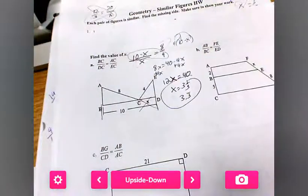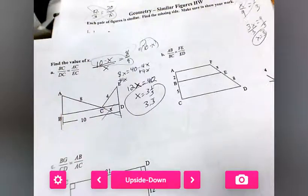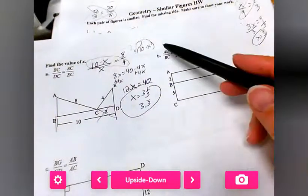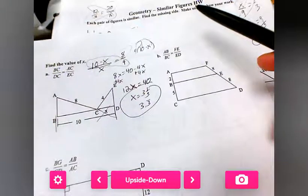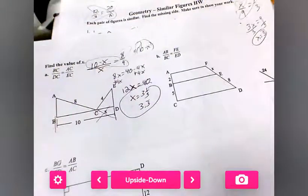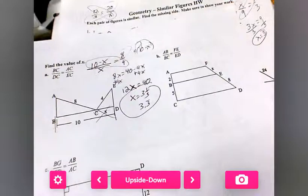Why don't you guys right now try B on your own? AB over BC equals FE over ED. Just fill those things in, plug in the numbers or letters.